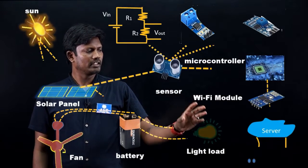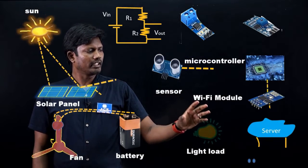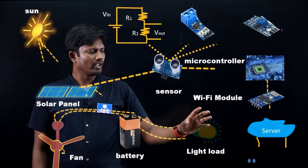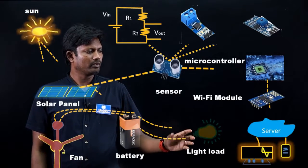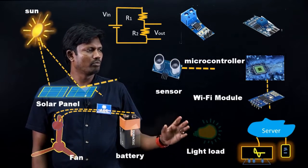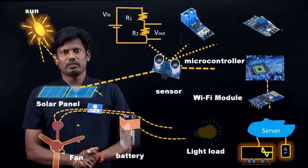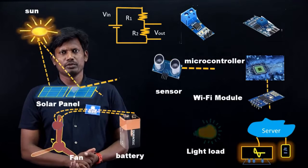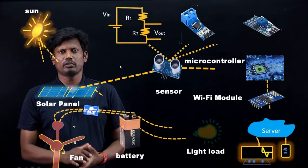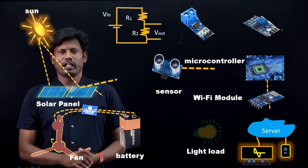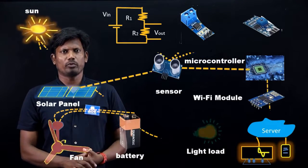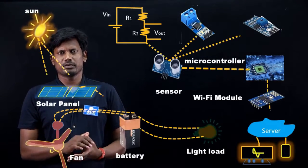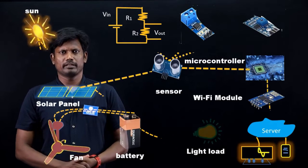We can access this real-time data via computer, laptop, or mobile. We could therefore use IoT to measure and monitor the real-time output parameters of a solar system.